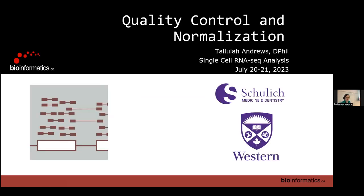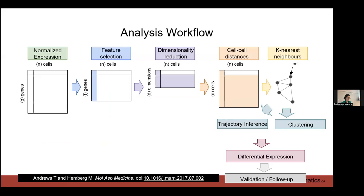We're going to talk about quality control and normalization. This is the first step in a long process of going from your single-cell RNA-seq experiment to your UMAP with all your different cell types and differential expression answering your important biological question. Right now we start at quality control and normalization to get our normalized expression matrix, then tomorrow we'll talk about feature selection, dimensionality reduction, cell-cell distances, k-nearest neighbor networks, clustering, and differential expression.